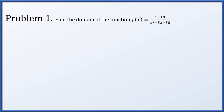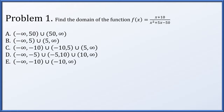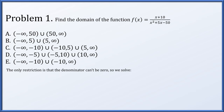For problem one, we're going to find the domain of the function f of x equals x plus 10 over x squared plus 5x minus 50, and we're given five options to choose from. For a rational function — one polynomial over another — the only restriction is that the denominator cannot be zero, so we solve that the denominator x squared plus 5x minus 50 is not equal to zero.